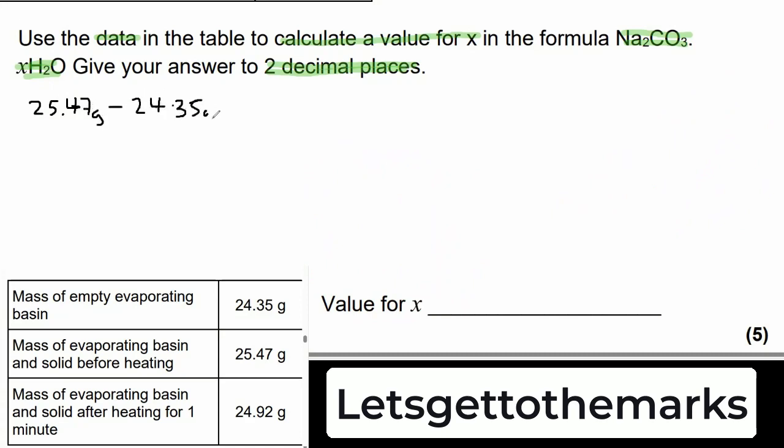The first thing to do is look at the table below and see that the mass of the evaporating basin and solid before heating is 25.47 grams. We want to subtract the mass of the empty basin from that to find out how much solid is in there. We get the answer 1.12 grams and that's the sodium carbonate·xH2O, the hydrated sodium carbonate.